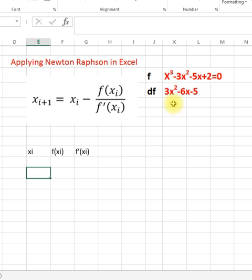So this is f and this is the derivative 3x²-6x-5. So we start by guess value, we can give any guess value 2, then what we need to do is we need to calculate the value of function at this x.